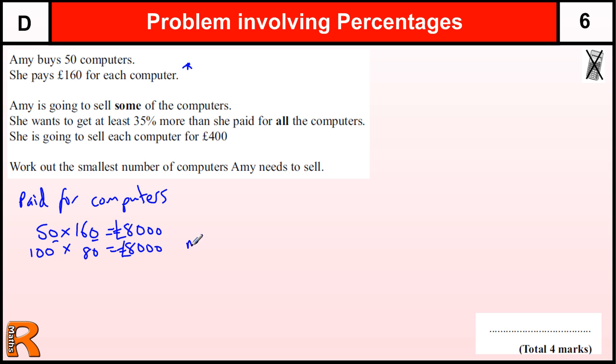You're going to get one method mark for getting to the £8,000 straight away. Next thing we need to do is to add 35% onto this £8,000 because that's how much she needs to sell these computers for to get the amount of money she wants, at least.